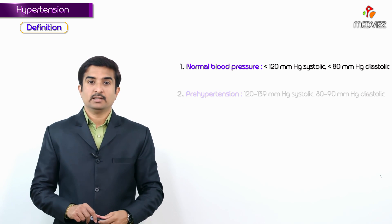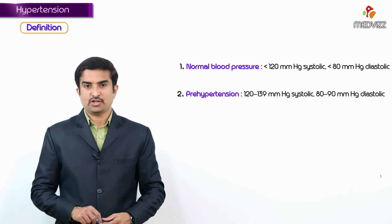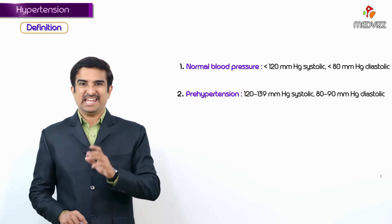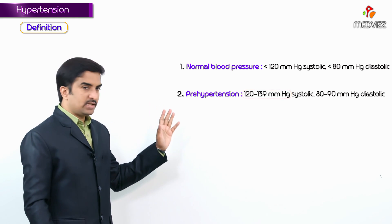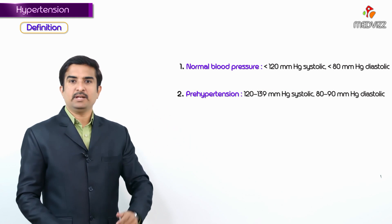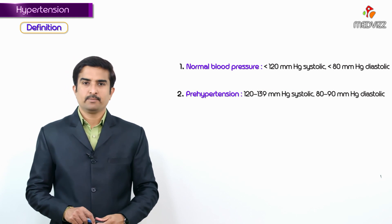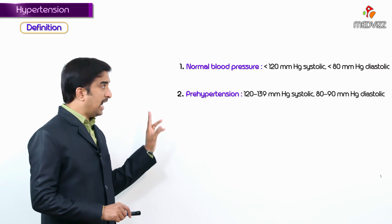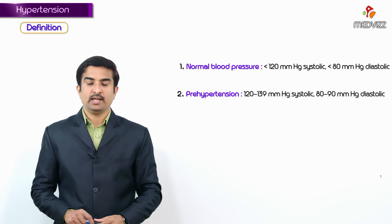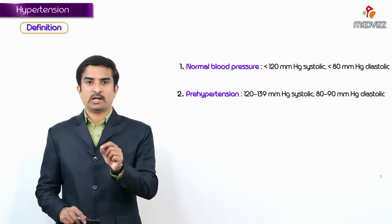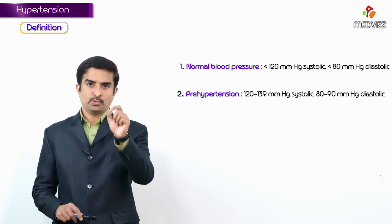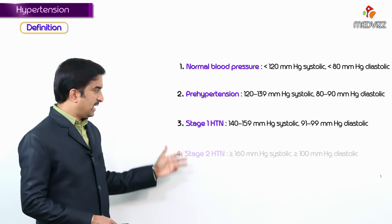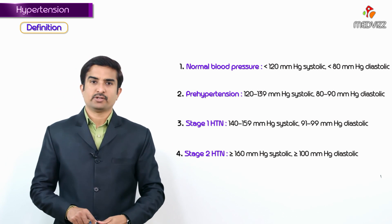The pre-hypertension stage is defined as systolic pressure between 120 to 139 mmHg and diastolic pressure between 80 to 90 mmHg. Beyond that, we have stage 1 and stage 2 hypertension.